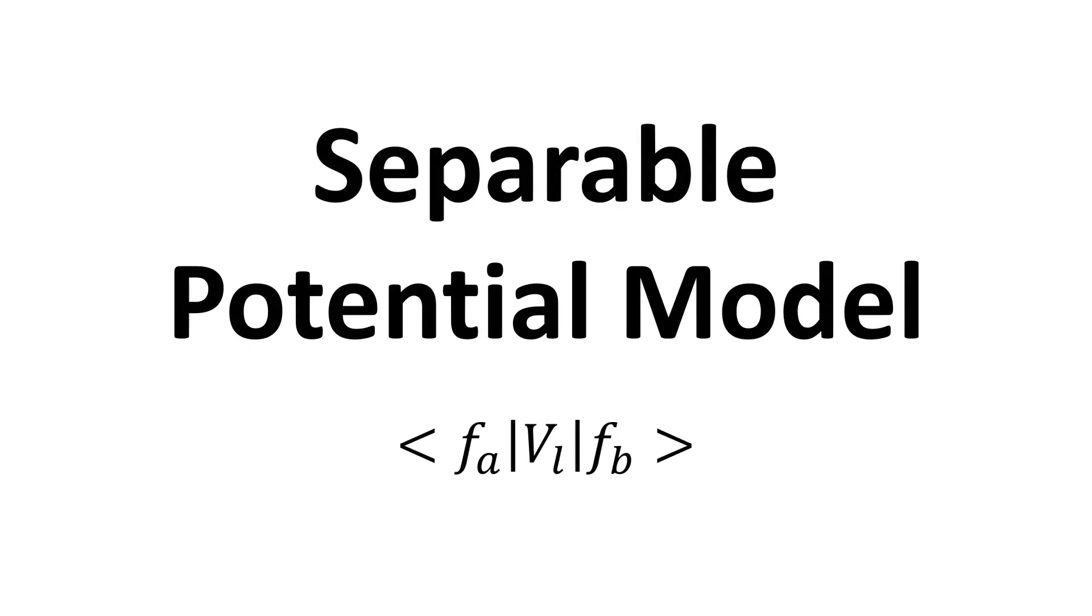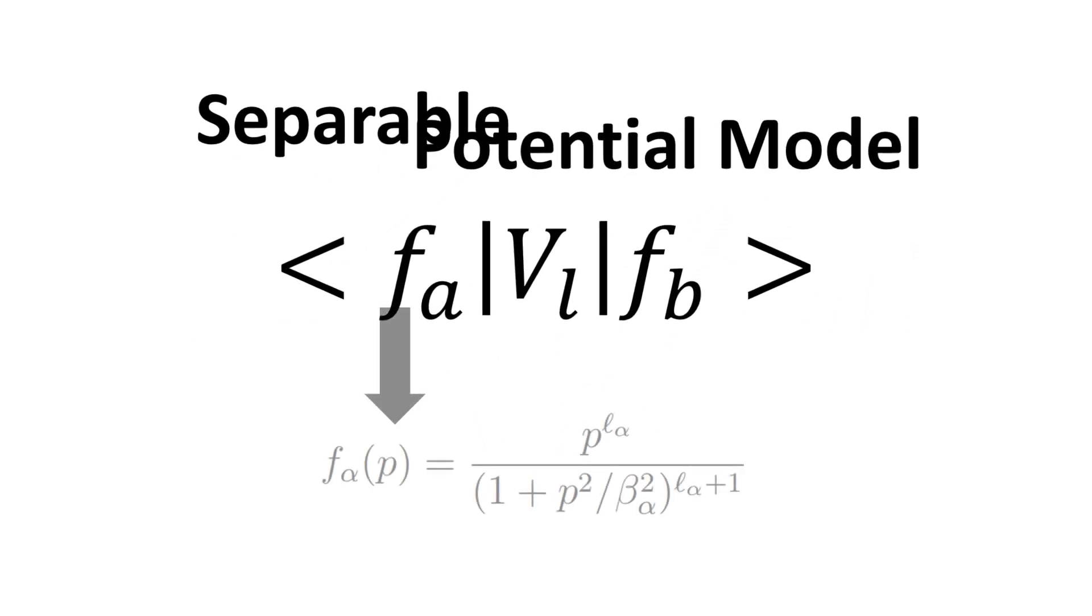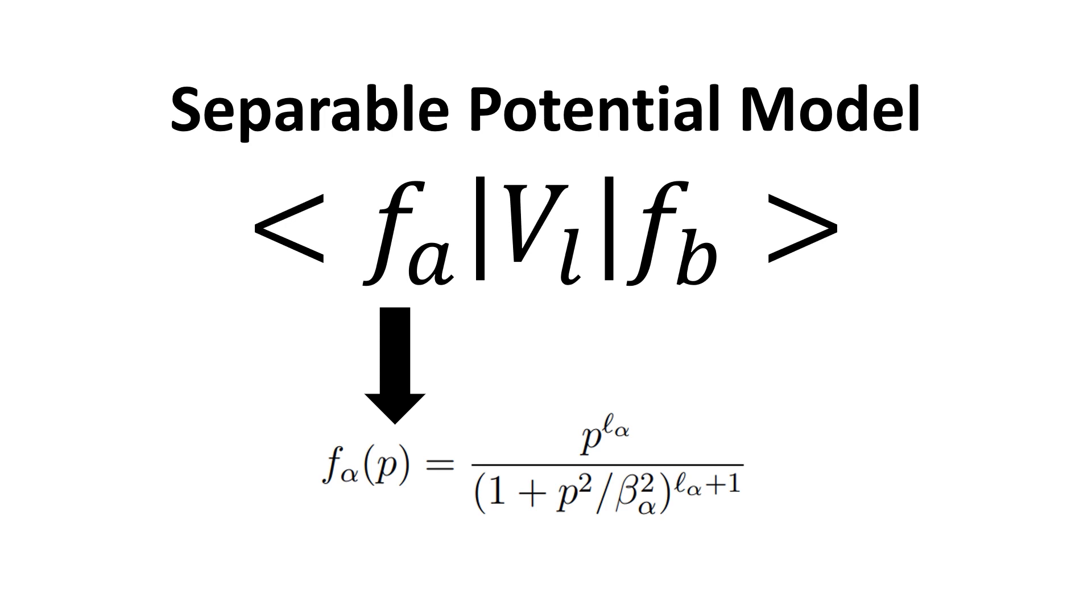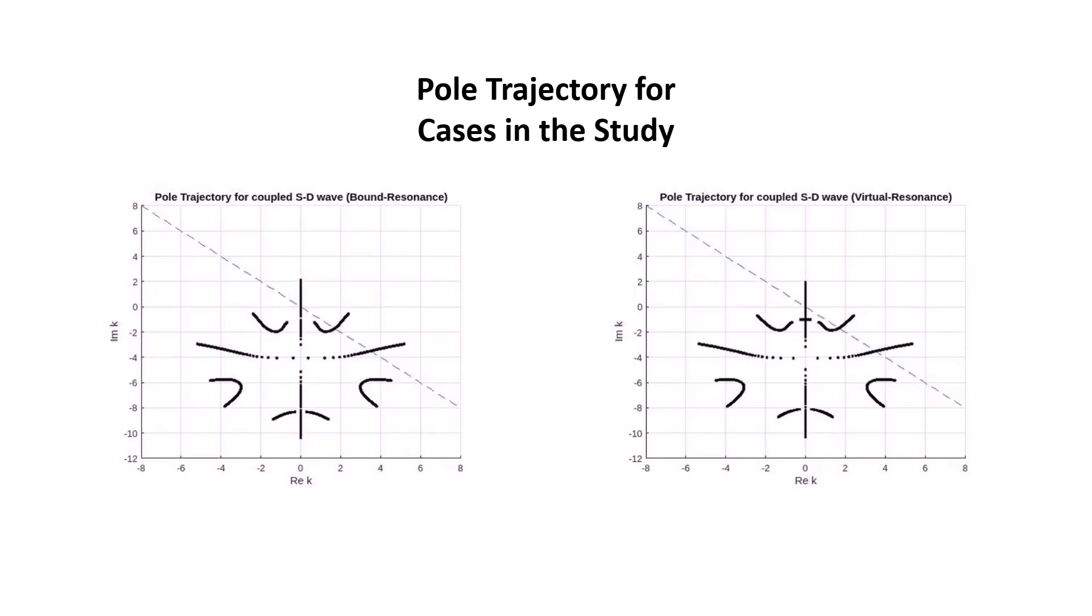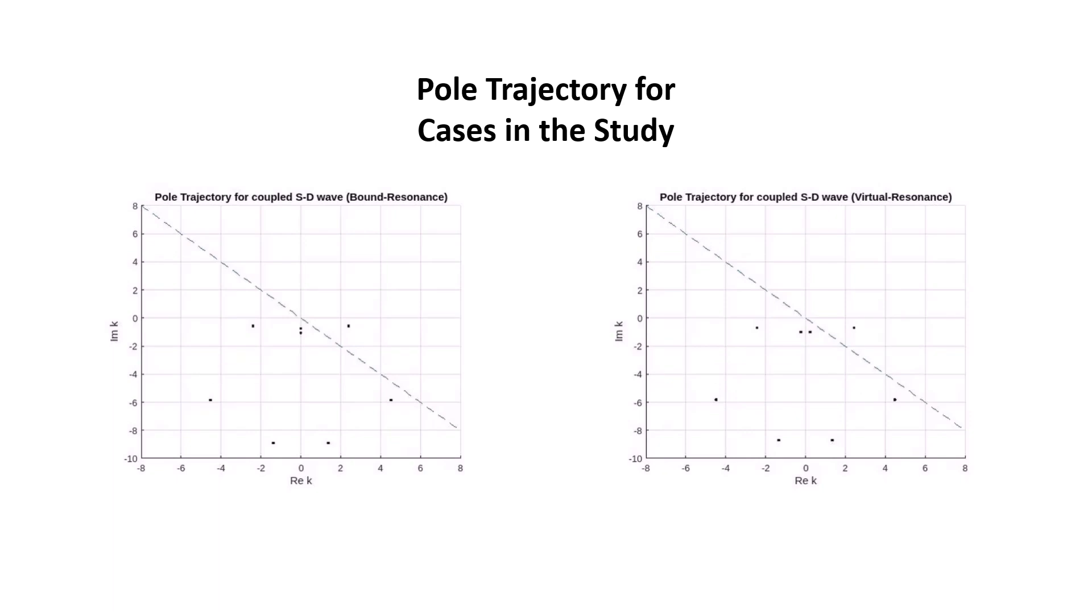We attempted to describe this diagram using the separable potential model. The separable potential model is differentiated by its regulator, which in this study we refer to as the form factor. We've structured this study by first producing poles for different cases. Poles appear due to the interactions inherited in the dynamics of the underlying theory. We then determine the behavior of each interaction by interpreting the T-matrix.